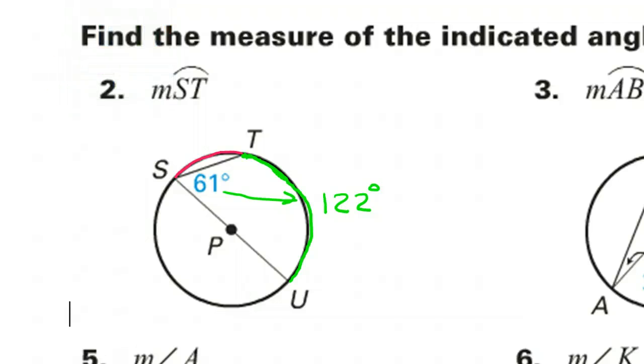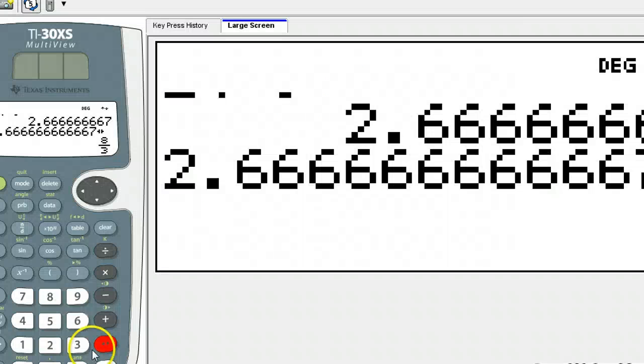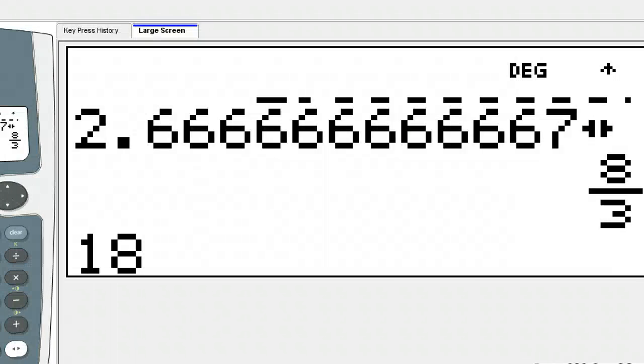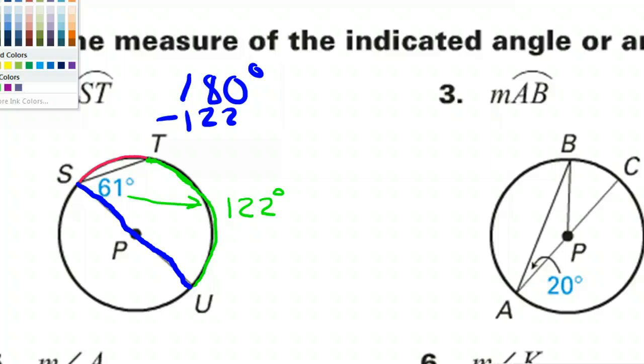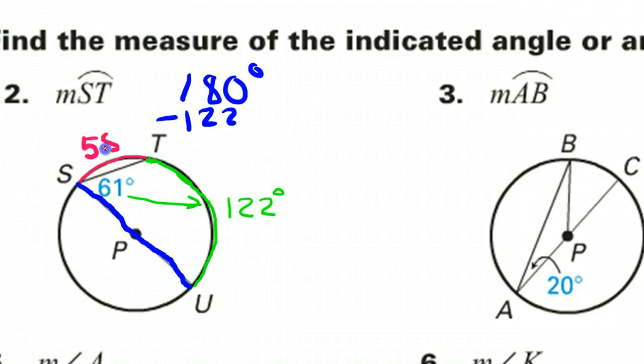Now, notice that this is a diameter. That means this entire top half of the circle, of course, is 180 degrees. So if I start with that 180 degrees and I subtract the 122, that should leave arc S-T. So 180 minus 122. That's 58 degrees. So that means arc S-T must be 58 degrees. So that's the answer to number two.